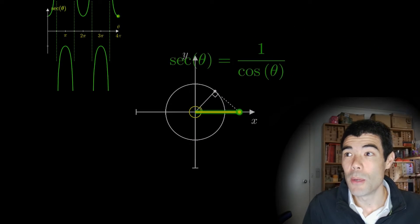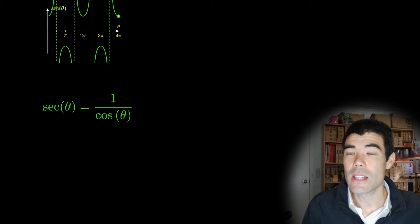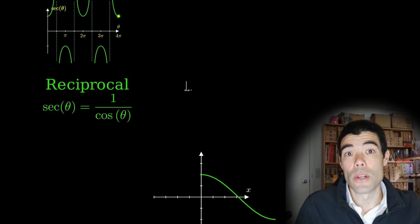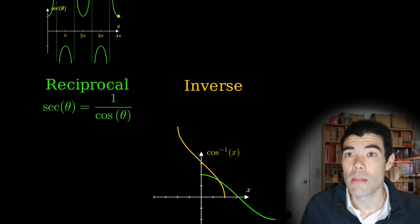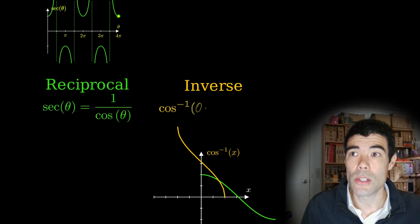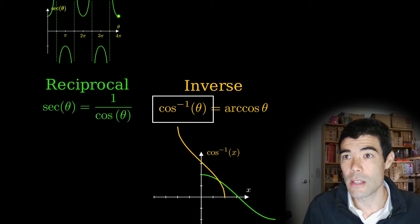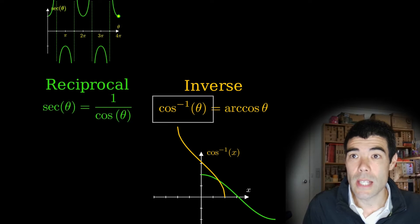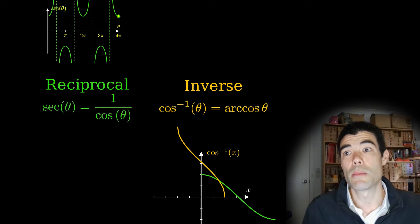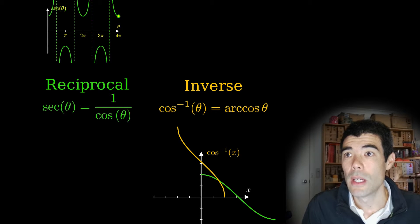First though, I need to point out a common point of confusion, and that is confusing sec theta, the reciprocal with cos theta, and with the inverse cosine function, sometimes also called the arc cos function. The inverse cosine function is written with this little negative 1 notation, and of course that's the reason it's confusing, because this same notation is often used for a reciprocal. For example, if you have a variable, a real number a, and if you see a superscript negative 1, that's usually taken to mean 1 divided by a.